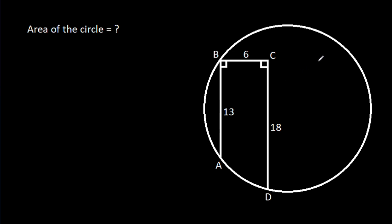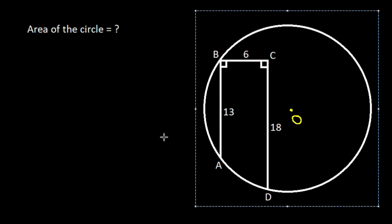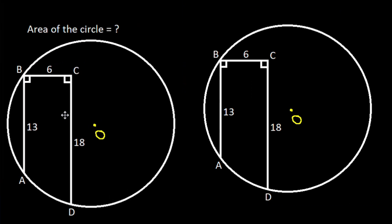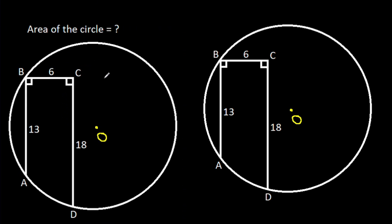We have to find the area of the circle. Suppose the center of the circle is O, and from point O, if we make a perpendicular on CD and AB, suppose this point is M and this point is N.